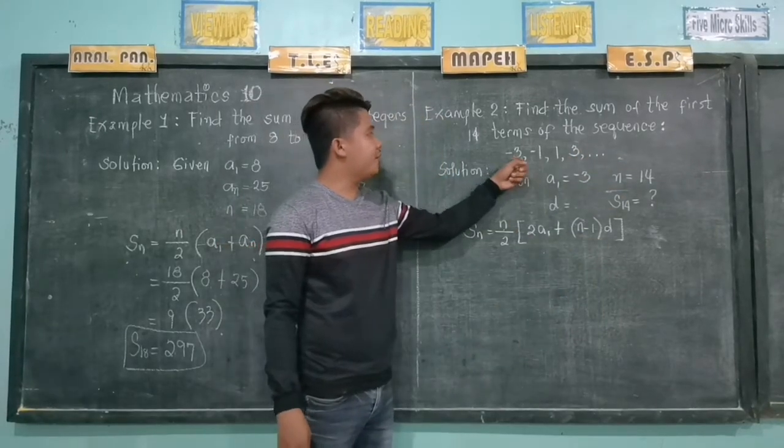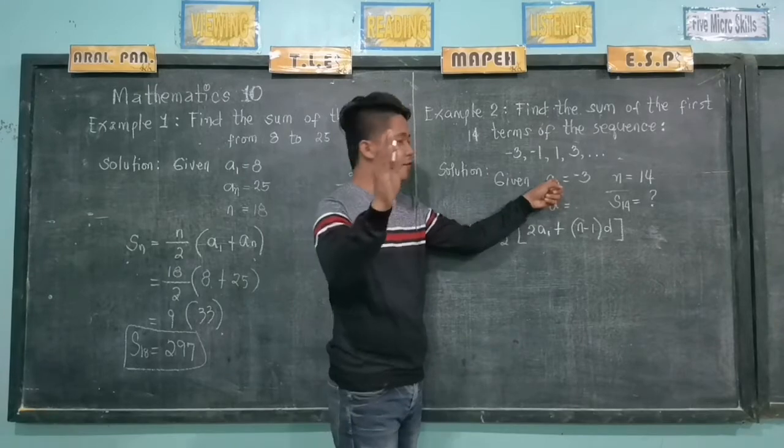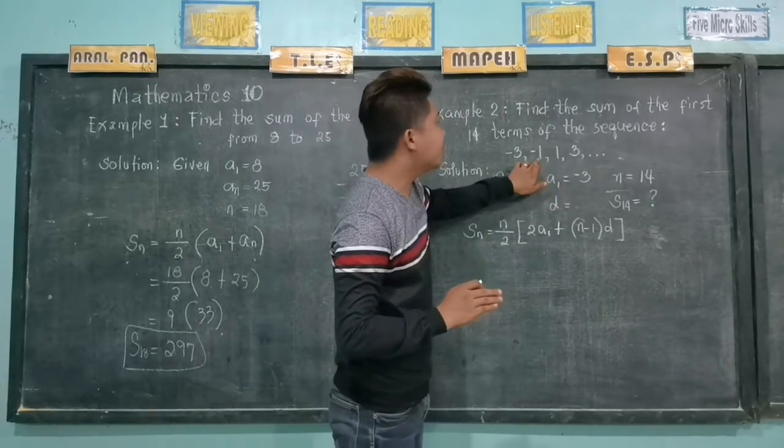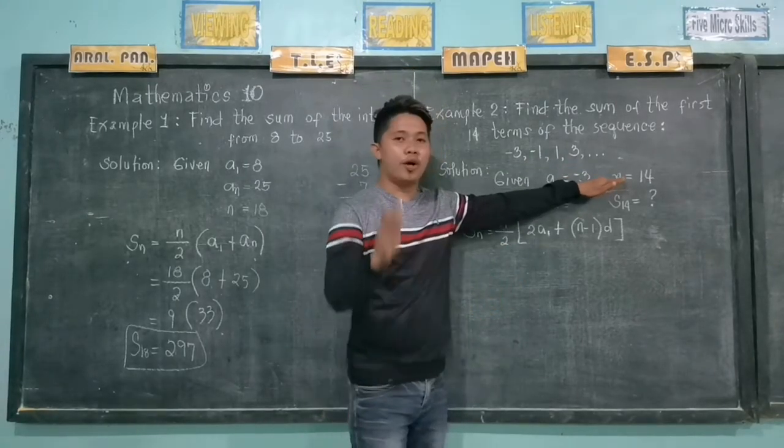So we have negative 3 as a sub 1, our first term, then the second term, third, fourth. Our n is 14.